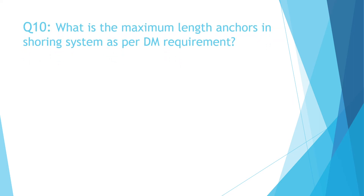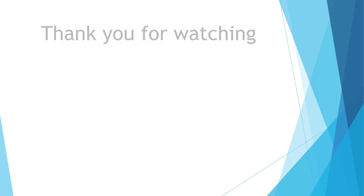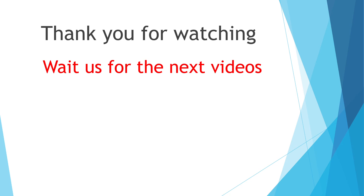Question 10: What is the maximum length of anchors ensuring a system as per PRDM requirement? A. 5 meters, B. 6 meters, C. 8 meters, D. 10 meters. The correct answer is D: 10 meters. Thank you for watching and wait for us in the next videos.